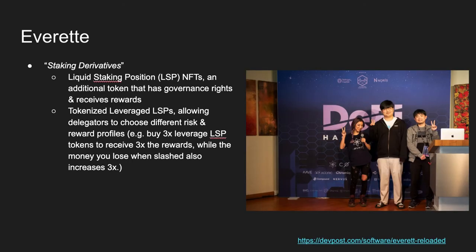A recent IBC example came up with a DeFi Hackathon. There is a team called Everett which won Hack Atom and also came in first place for the DeFi Hackathon. What they did was create staking derivatives — liquid staking positions (LSPs), NFTs, and an additional staking token that has governance rights and receives rewards. These are tokenized leveraged LSPs, allowing delegators to choose different risk and reward profiles, such as buying 3x leverage LSP tokens to receive 3x the rewards while also increasing slashing losses by 3x.